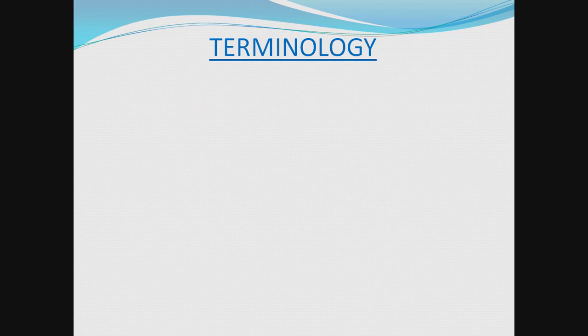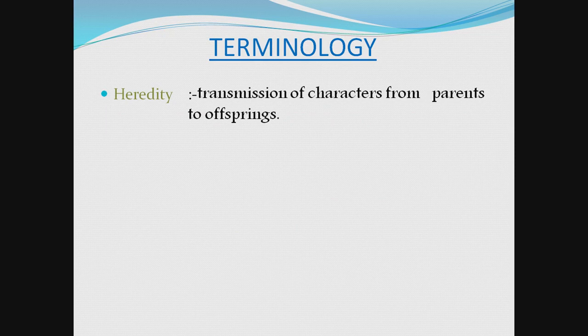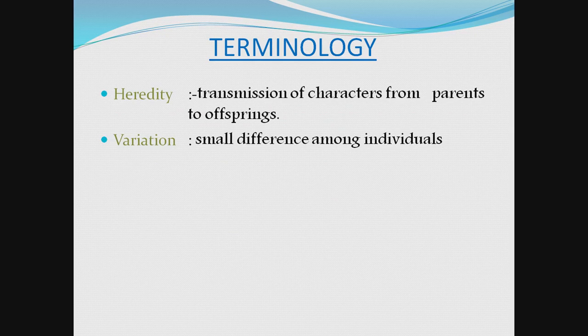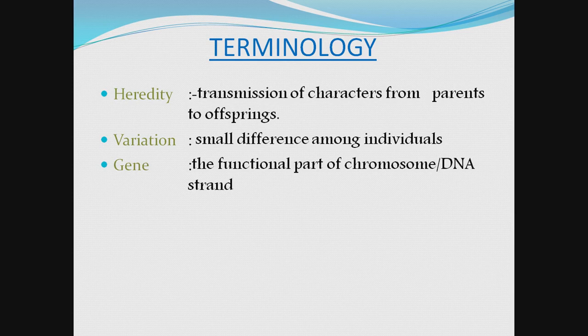Before entering into genetics, we will learn some terminology. The transmission of characters from parents to offspring is called heredity. But it is not complete — there is always a little difference due to meiosis, and this little difference among individuals is called variation. What takes the characters from one generation to the other? That factor is called a gene.